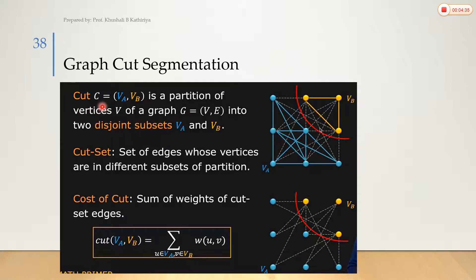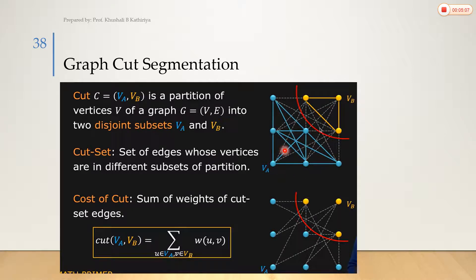The cut of (VA, VB) is a partition of vertices V of graph G. VA and VB are subsets of vertex set V. The cut set is the set of edges whose two endpoint vertices belong to different subsets of the partition. So VA is one cut set and VB is another cut set.